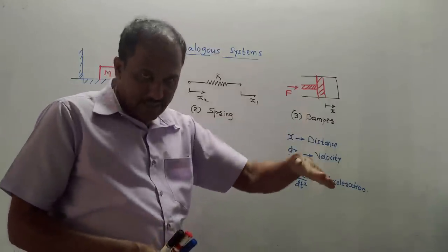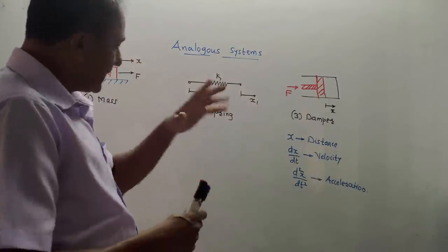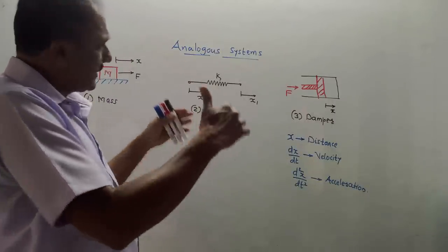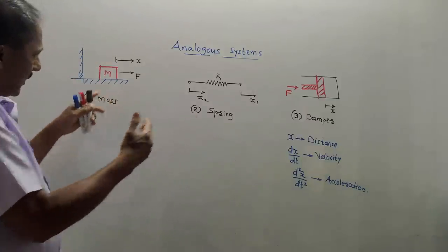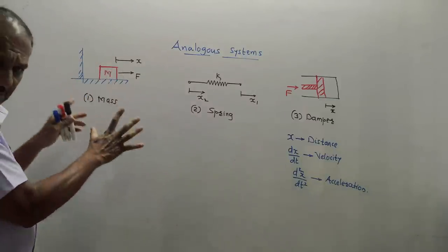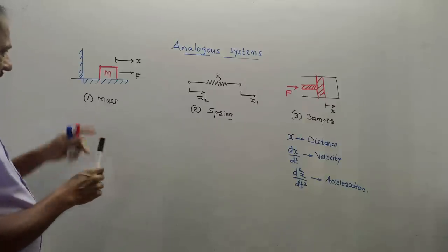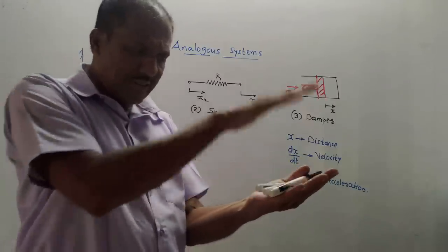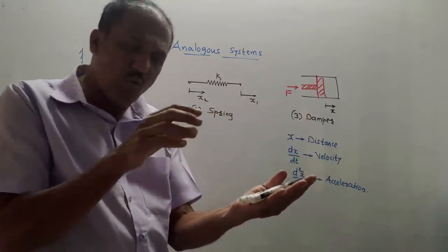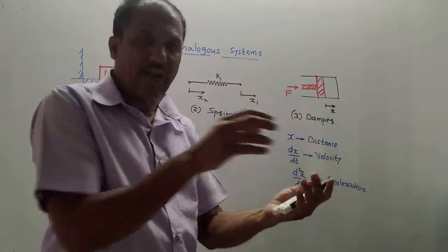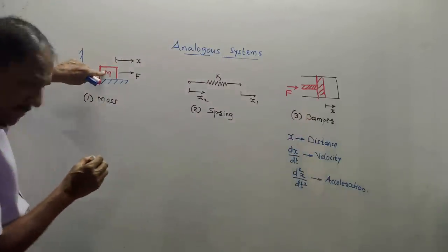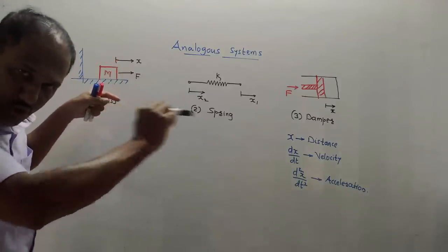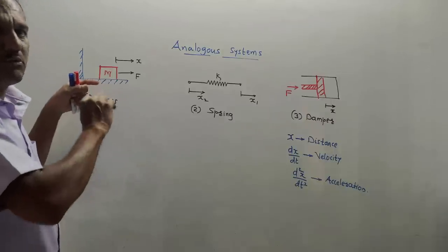There is an analogy between mechanical systems and electrical systems, especially in the automobile sector. Before starting this session I would like to cover three basic things commonly used in mechanical systems. The first is mass. Let us take a common example: if I put a phone on the tabletop and want to make a motion of that cell phone, I need to apply a force.